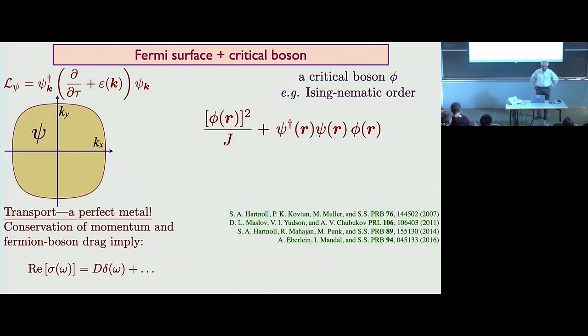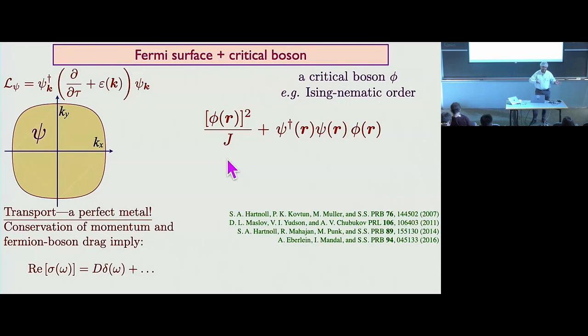But now what about transport? For the DC transport, the point is that there's something called drag: since the quasi-particles don't exist and the scalar field phi is so strongly coupled to the Fermi surface, any momentum the fermions give to the bosons can come back to the fermions. There's really no distinction between the two — the whole system is just some strongly interacting system which has extreme drag. This is very different from electrons and phonons because phonons are weakly coupled.